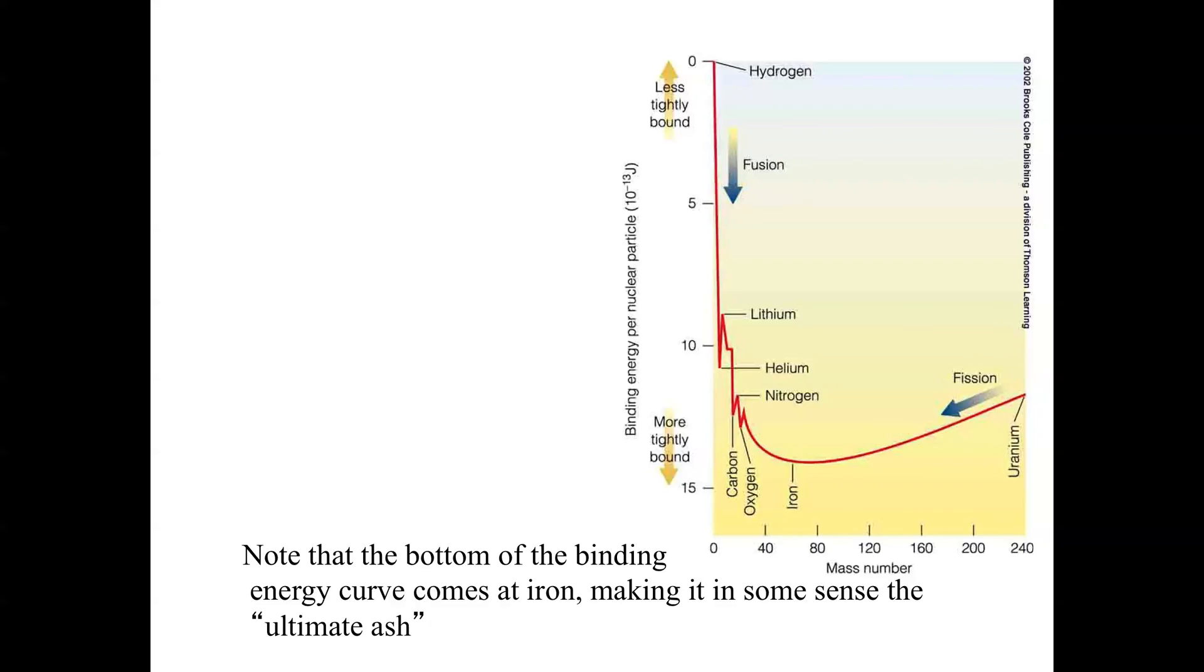When you fuse hydrogen into helium, you release a very large amount of energy. The binding energy of helium is very much more negative than hydrogen. When you take helium and make it into carbon, you release somewhat less energy, and when you make carbon into nitrogen, you release even less. This is because you're having to contend with the electrostatic repulsion of the protons. You have more and more protons in each nucleus and they're repelling each other, so it gets harder and harder to make a nucleus that has released more energy as you go along.